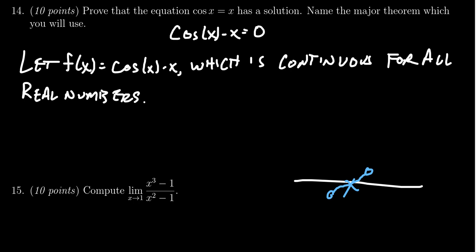Notice that this equation, cosine of x minus x equals zero, is equivalent to saying f of x equals zero. We're trying to prove that f of x has an x-intercept somewhere. And so in that regard, we're going to say something like the following.